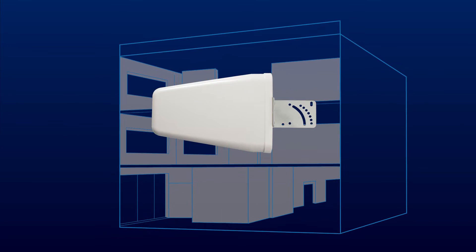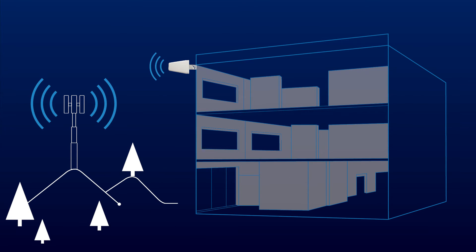The donor antenna collects the weak signal on the outside of the building. It passes the signal through a cable to the signal booster, which amplifies the signal and sends that to the inside antenna. The inside antenna then broadcasts that stronger signal throughout the building.